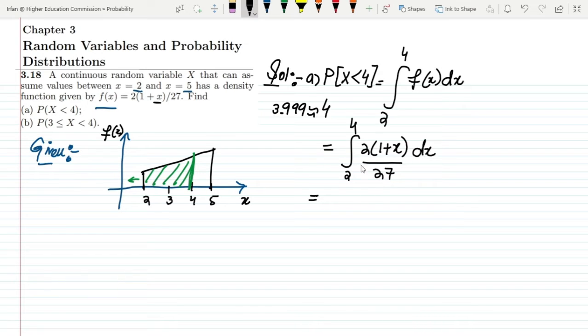Now taking this 2/27 out of it, we will have the integral from 2 to 4 of (1 + x) dx, also 2/27. The values here—applying the linear property here.